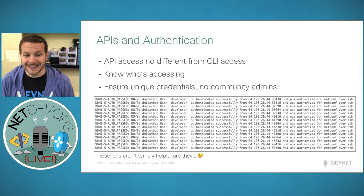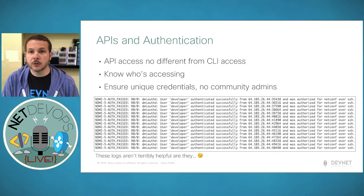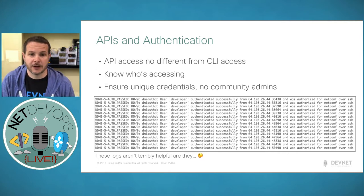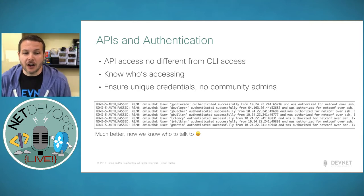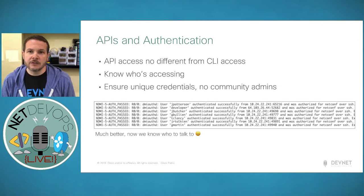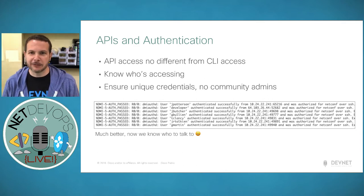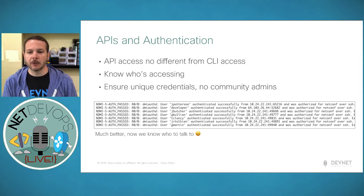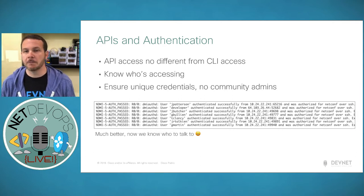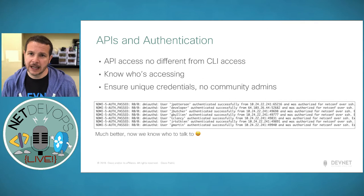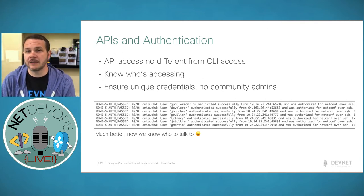If this was a production device, those shared-account logs wouldn't be helpful to understand who was manipulating or reading data from our network. On the contrary, if we saw logs where individual users were logging in as their own credentials — j.patterson, j.butcher, tom.clancy — we can see individual people, where they came in, and potentially what they did while they were accessed. This is a much better strategy, and hopefully something you've already started to leverage even outside of API access.